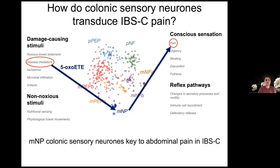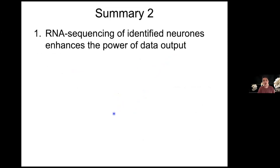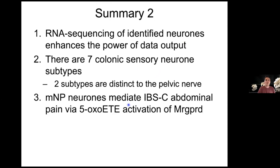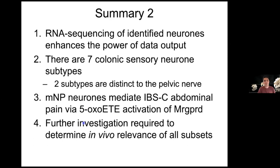To summarise the colonic section: single-cell RNA sequencing of identified neurons enhances data output. We identified seven colonic sensory neuron subtypes, two being distinct to the pelvic nerve. The non-peptidergic MRGPRD-positive neurons mediate abdominal pain in IBS-C through the 5-oxo-EET mediator, which is only upregulated in those patients.